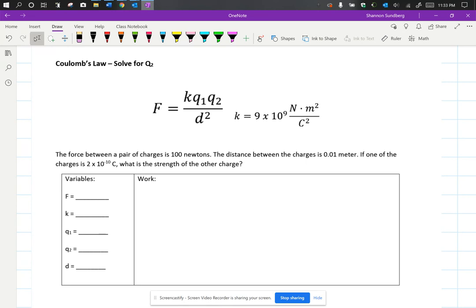So F is for force, K is that constant K value. You're always going to be given it, you're never going to have to memorize it.